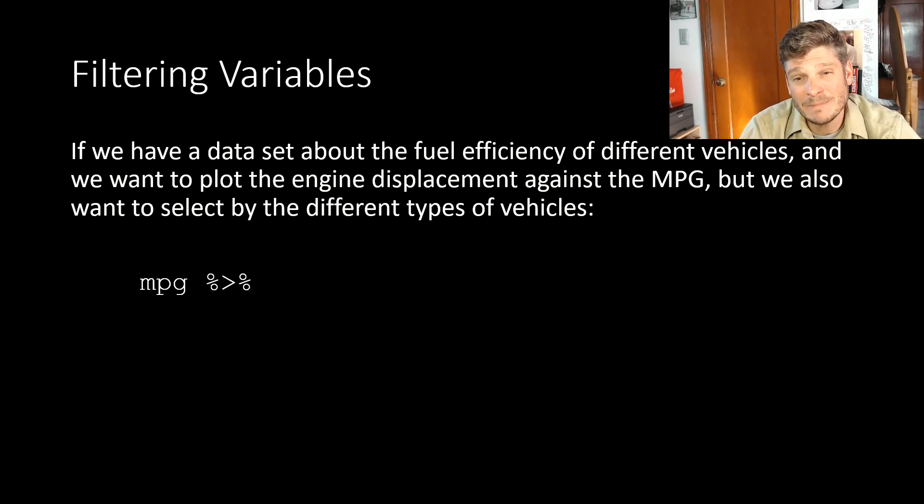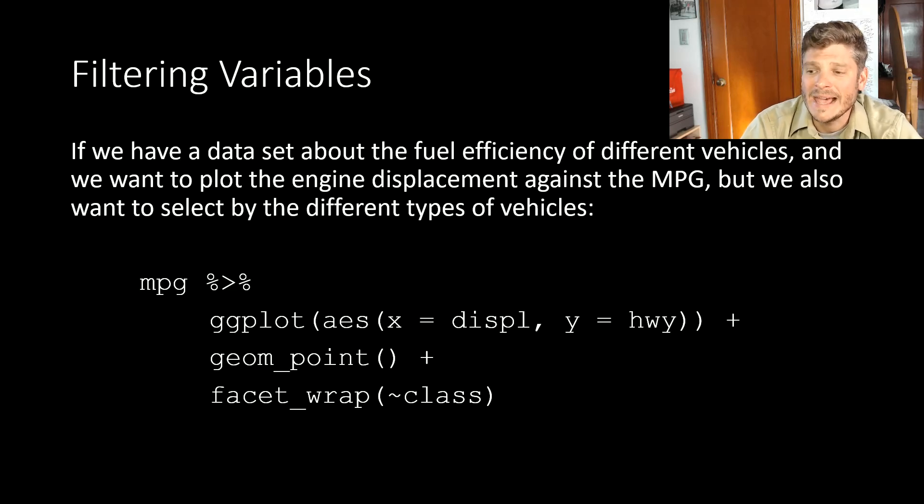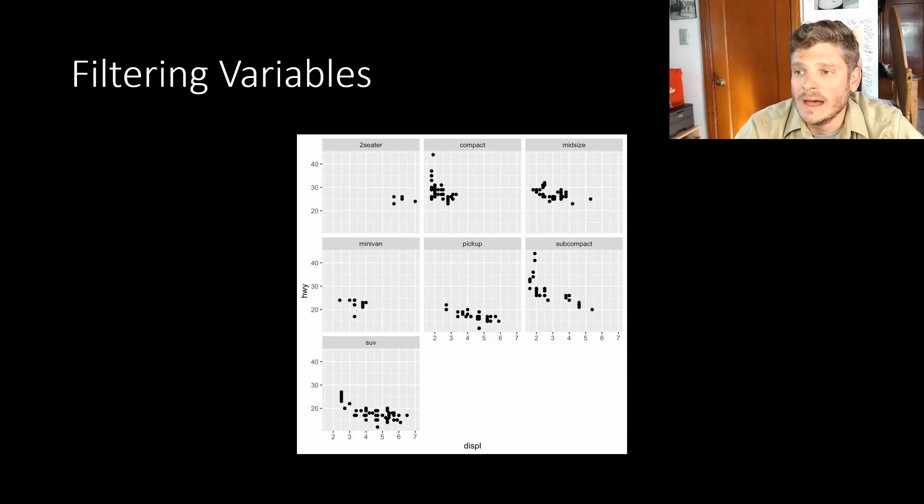I'm going to pipe in my data set which is called miles per gallon into ggplot. My x-axis is the displacement, the engine displacement. My y-axis is the highway miles per gallon. I have to use the exact names of those columns. When I add my layers, I'm going to add plus geom_point because I want this as a scatter plot. Then I'm going to add plus facet wrap. Facet wrap is a function, so we have parentheses, and I'm going to do it by the different classes of vehicles. You have to use the squiggly tilde and then the third variable we are looking at to do a facet wrap.